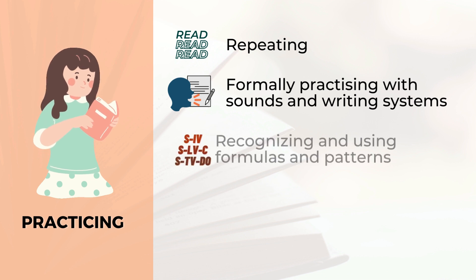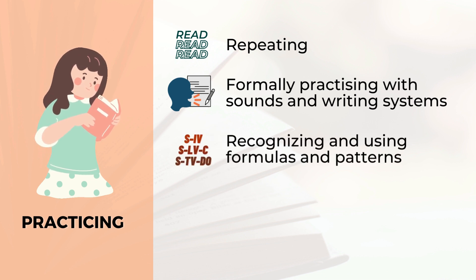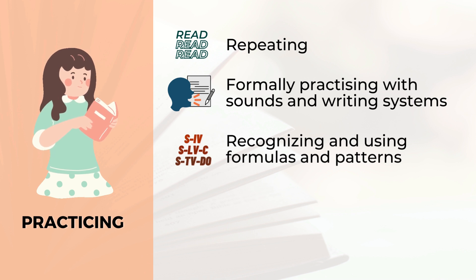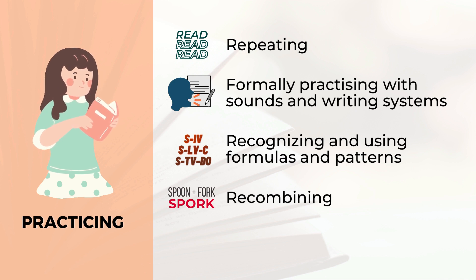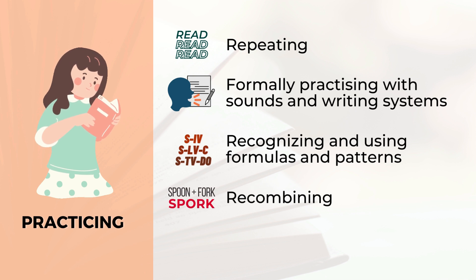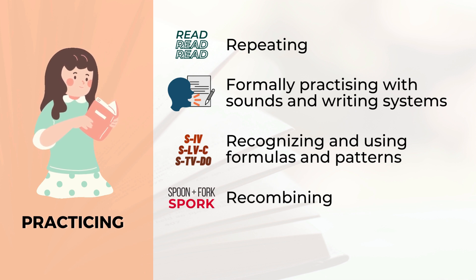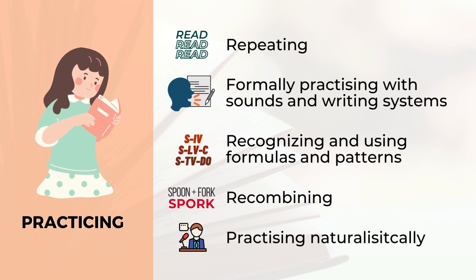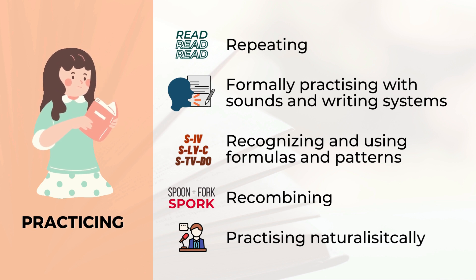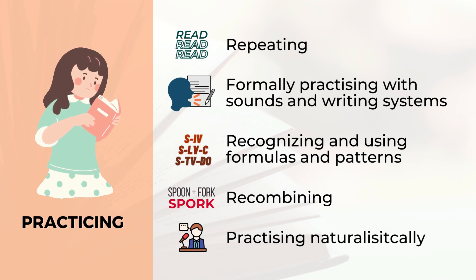Three, recognizing and using formulas and patterns. Four, recombining, such as combining known elements in new ways to produce a longer sequence, as in linking one phrase with another in a whole sentence. And five, practicing naturalistically — or practicing the new language in natural, realistic settings, as in participating in a conversation.